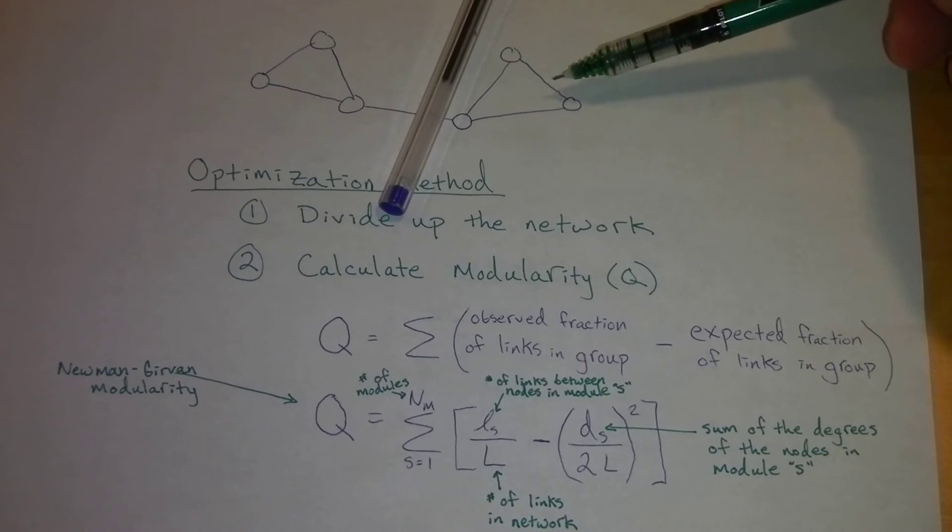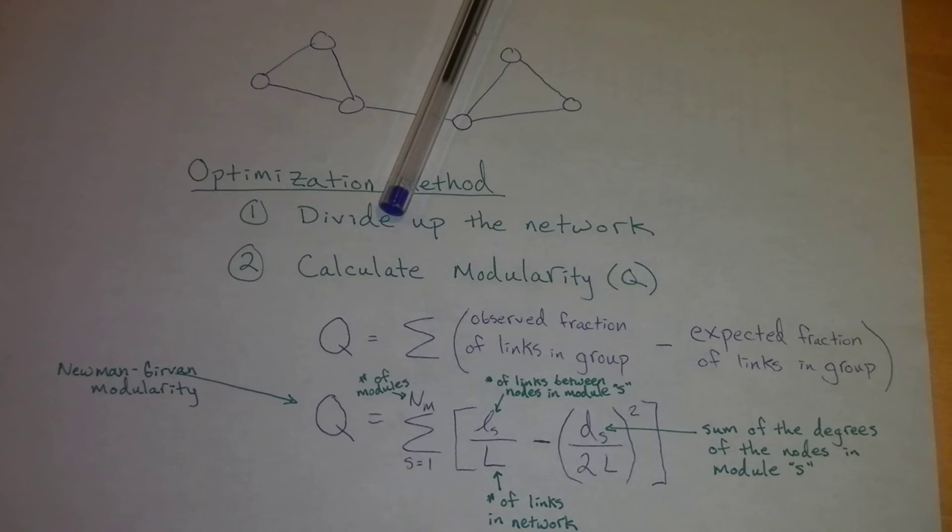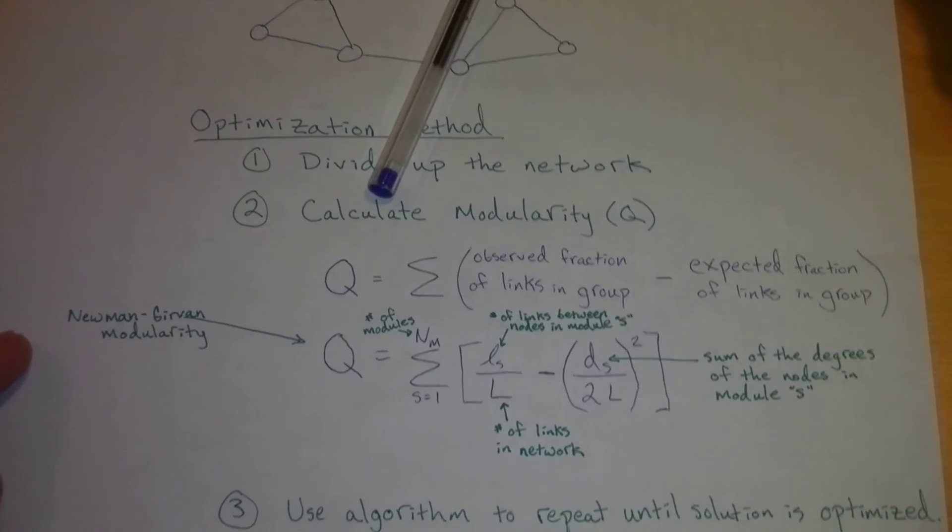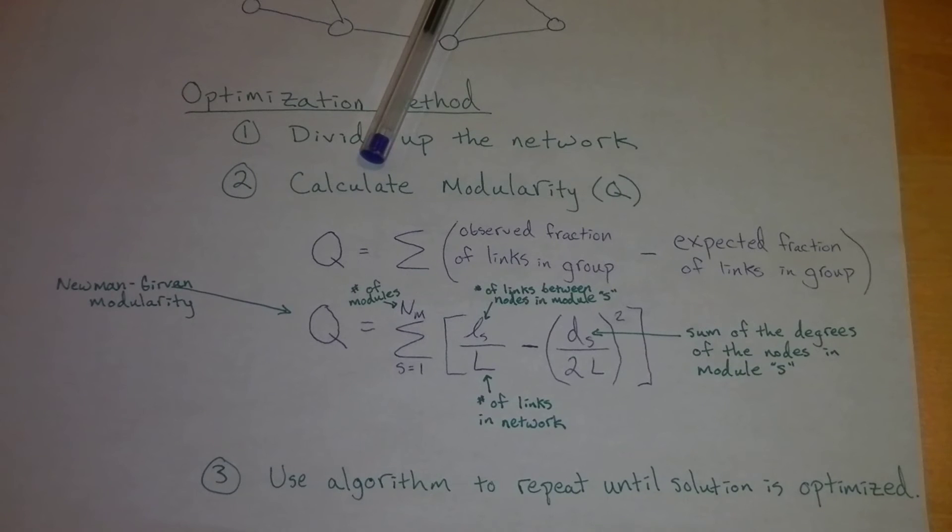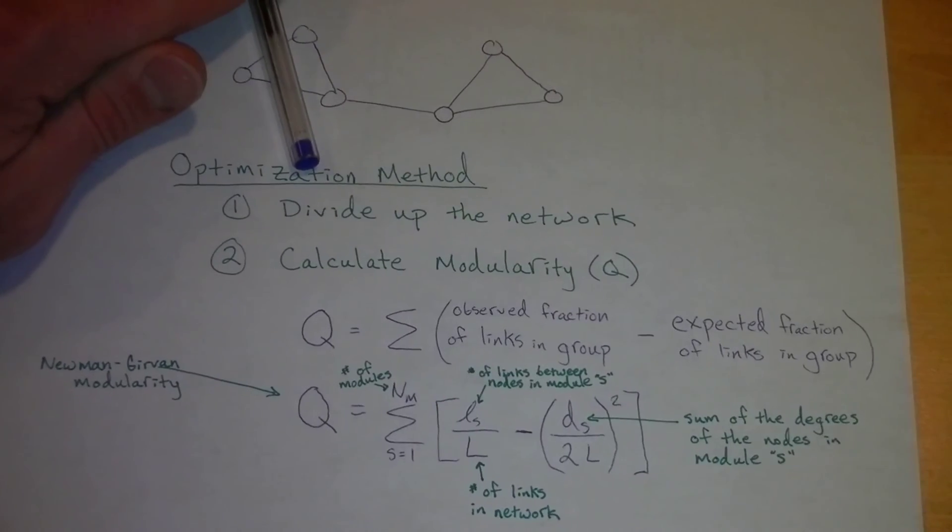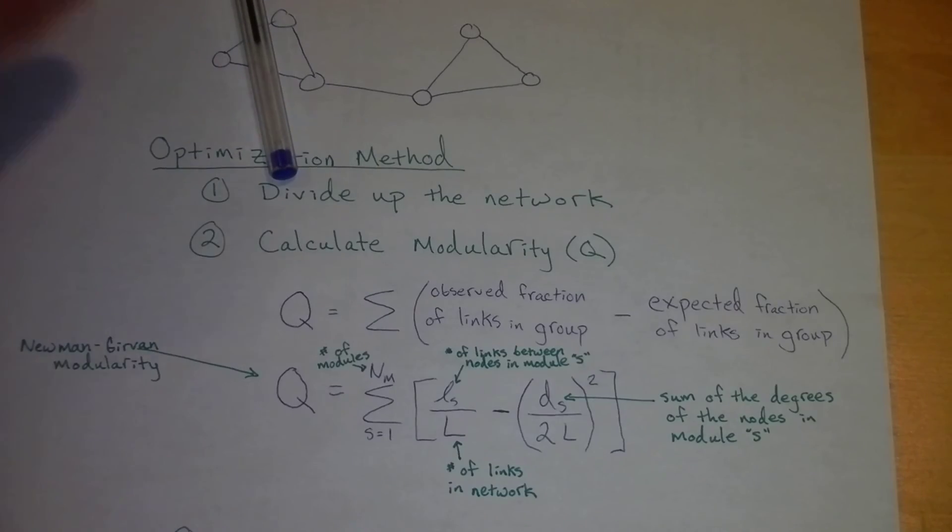It's essentially going to be the same thing on this side for this particular partition. We'd add them up and get our value of modularity. Then what happens is you use an algorithm to repeat this process until the solution is optimized. For example, a new partition would be created in the network, let's say right here. Modularity would be calculated again, and this process continues until modularity is no longer increasing.